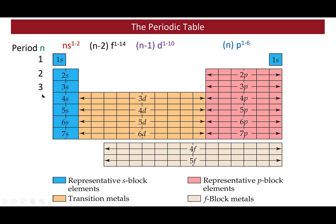The two f-block series at the bottom correspond to filling the 4f and 5f orbitals. Each period of the periodic table corresponds to an energy level: period 1 is n=1, period 2 is n=2, and so on. For each period, the configuration fills the ns orbital, then the (n−2)f orbital, then the (n−1)d orbital, then the np orbital. For energy level 1, there are no f, d, or p orbitals, so only the s orbital is filled; energy level 2 fills s and p orbitals only.